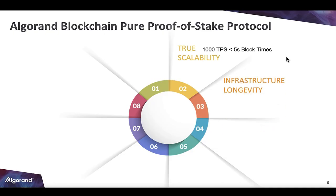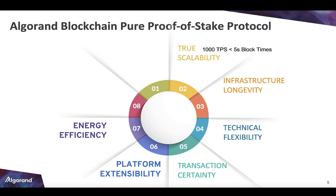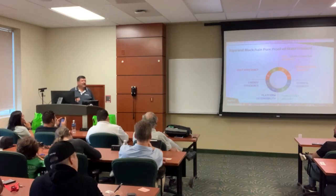You've got crucial scalability, a lot of infrastructure, longevity, technical flexibility with lots of SDKs, and transaction certainty — there's no forking. Everything written is committed. Instant transaction finality, a very extensible platform, and extremely energy efficient. With proof of work for Ethereum and Bitcoin, a lot of energy is used — that's a big knock on Bitcoin. Algorand uses simple math to determine the next block, so it's very green.